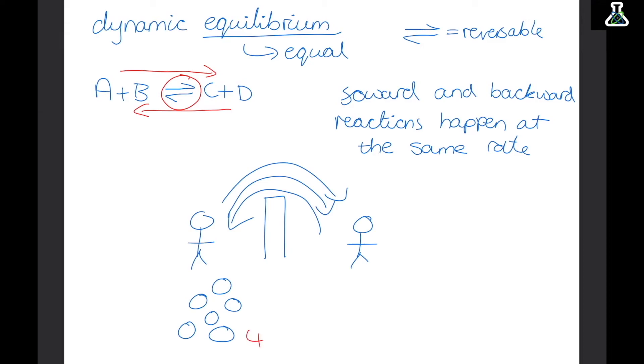Now this doesn't mean that they have the same number of balls. So this person could have four on his side and this person can have two. But it means that the number that they have stays consistent. Every time this person throws one over this person throws one back. Now this can only happen in a closed system. And this is because if it's open the products can escape meaning that they can't come back together to form the reactants.